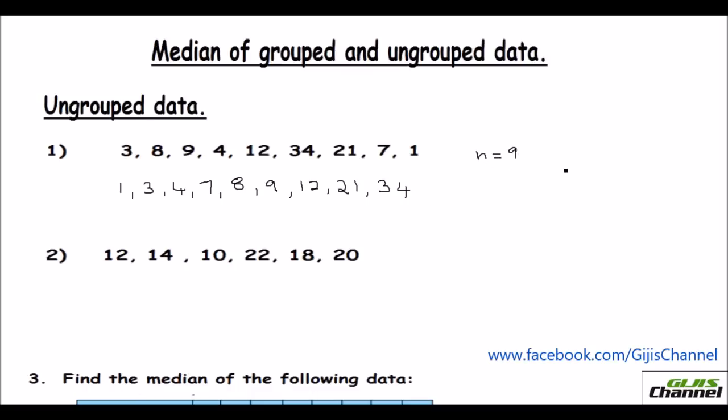So when the n is odd, this is odd number. When the n is odd, all you need to do is you just find out median will be n plus 1 over 2th item. So let me do that. So n plus 1 is 9 plus 1 by 2. So that is 10 by 2. That is 5. So it is the 5th number which you are going to choose.